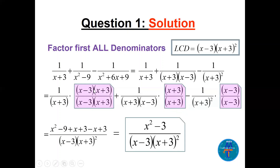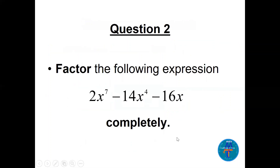After multiplying the numerators — getting x²-9, x+3, and x-3 — we add to get (x²-3) over (x-3)(x+3)². The whole fraction is the answer. You cannot simplify further because there is no equation here, only an expression.